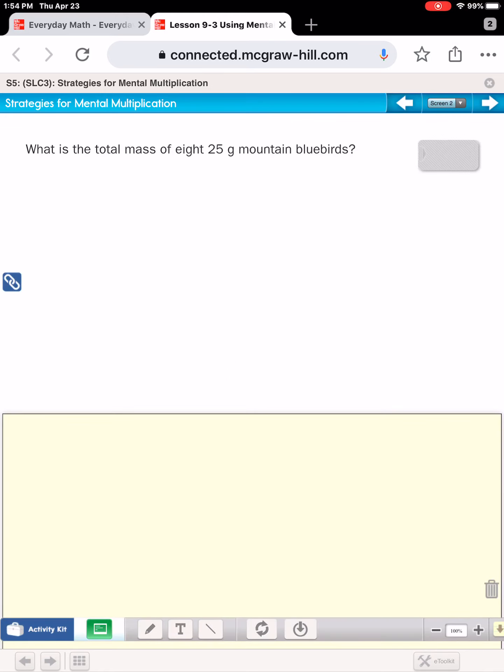Let's look at some more. What is the total mass of eight 25 gram mountain bluebirds? So the problem we're trying to answer is eight times 25. Now, some of you might be able to do that mentally. But if not, you can take one of these factors, either the eight or the 25, and break it into easier numbers. Let's start by breaking apart 25. I could break apart 25 into eight times 20 and eight times five. Eight times 20, I know eight times two is 16. So eight times 20 must be 160. And eight times five is 40. So when I add those two products, 160 plus 40, my answer is 200. So eight times 25 must be 200.